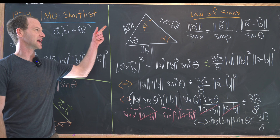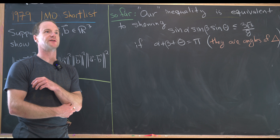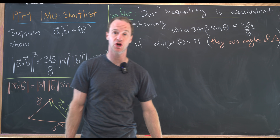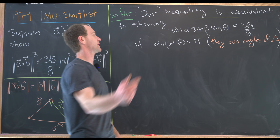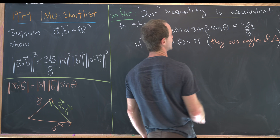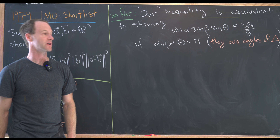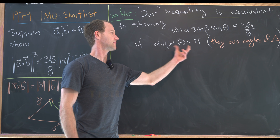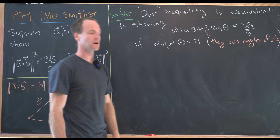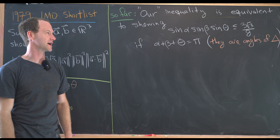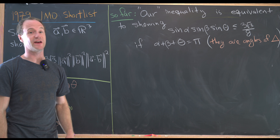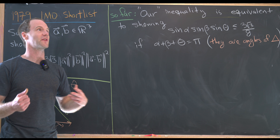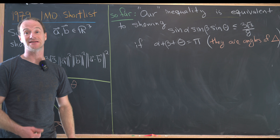After some work, our proposed inequality is equivalent to: sine alpha times sine beta times sine theta is less than or equal to three times the square root of three over eight, where alpha plus beta plus theta equals pi. That sum equaling pi is the same as saying these are angles of a triangle, which is exactly our setup. I'm going to finish this off using Lagrange multipliers in multivariable calculus — not the easiest way, but a nice application of this tool.